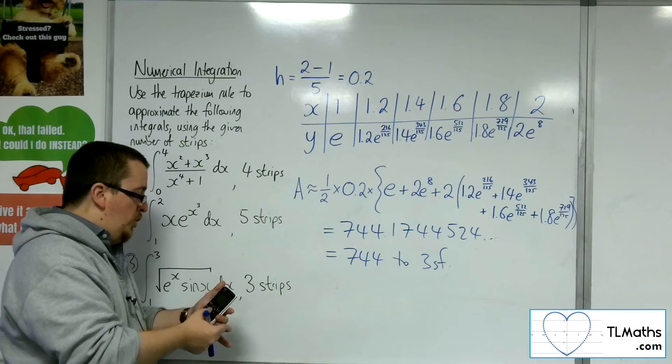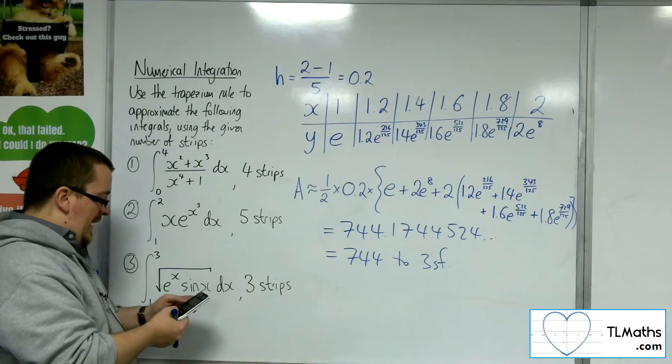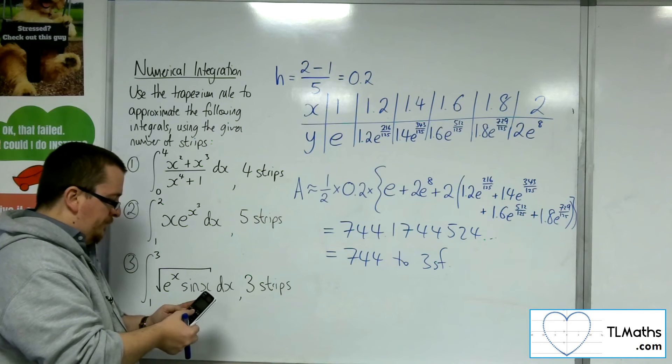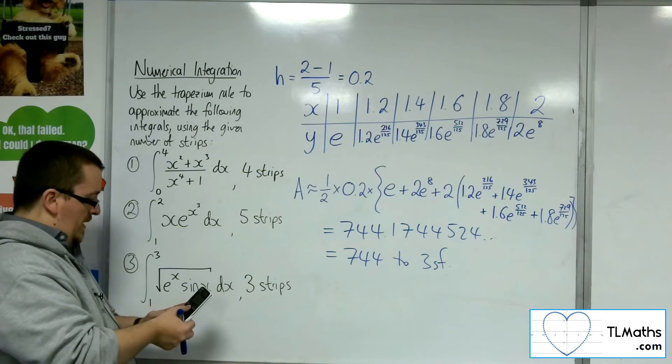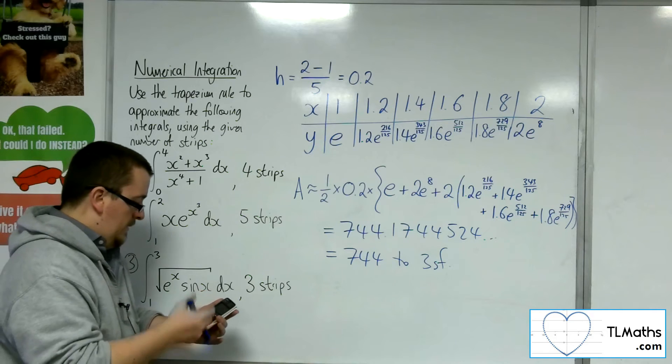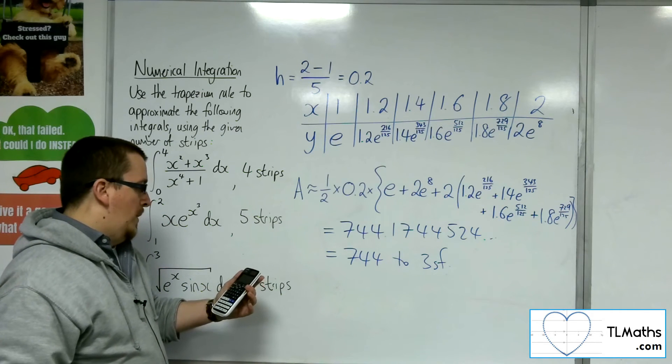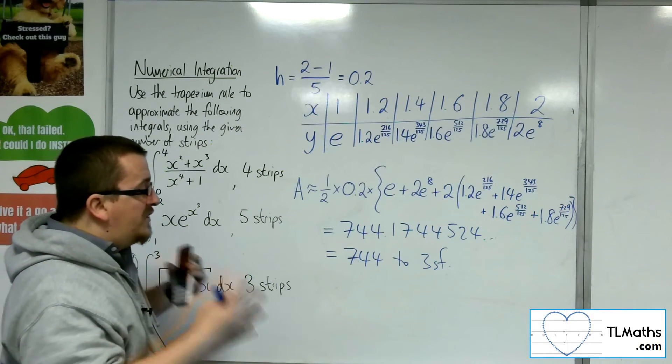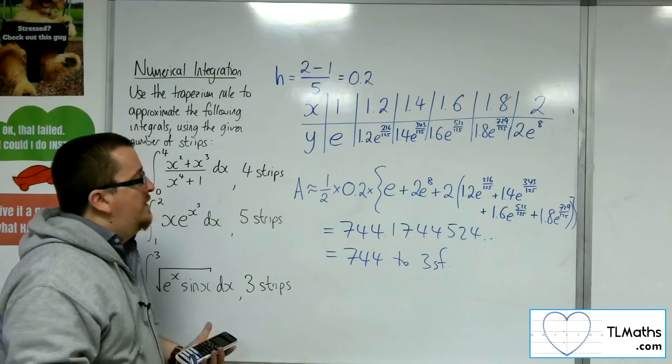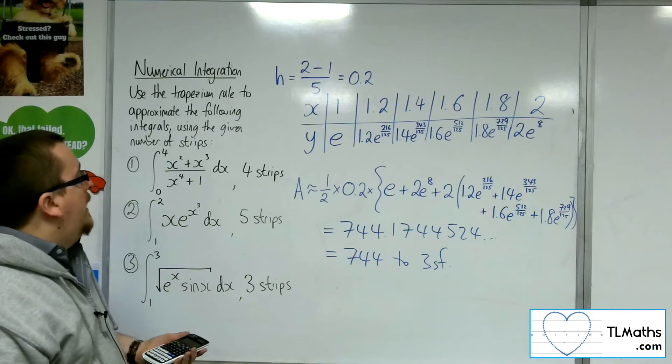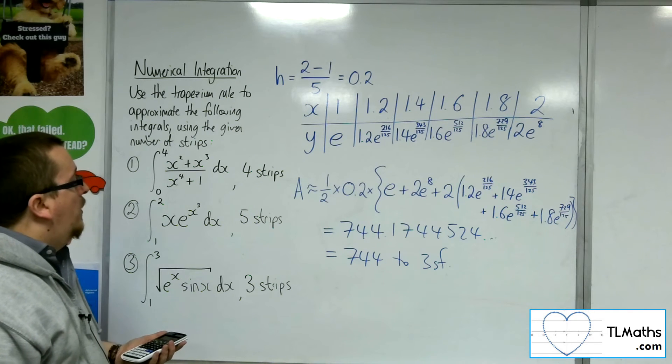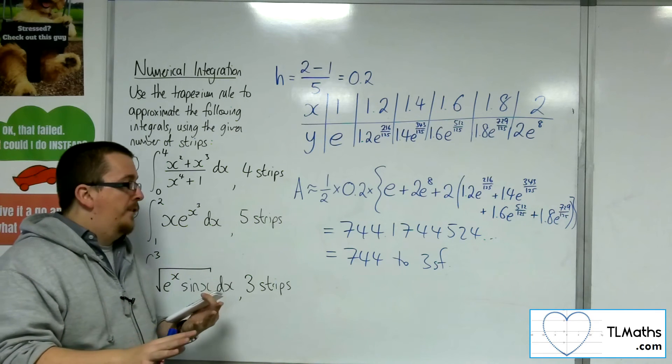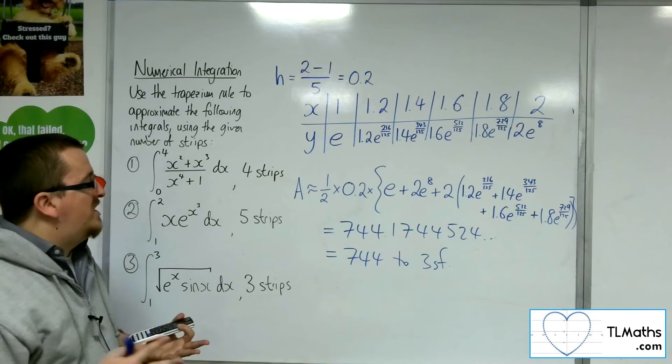Once again, you're going to want to check that your answer is reasonable. So x e to the x cubed. Evaluated between 1 and 2. 521.93. Now, that doesn't necessarily mean that my answer is wrong. It really depends on the shape of the curve. Whether I've got an overestimate or an underestimate.